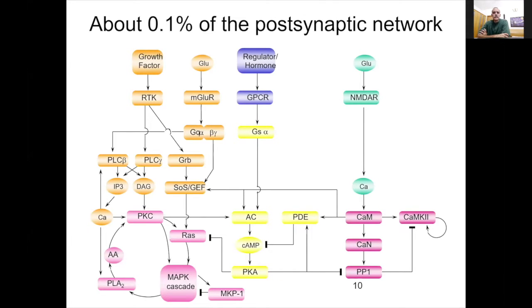Here is a network that I worked on many years ago. I estimate it's about 0.1% of what is in there. But these may be familiar pathways to many of you. On top you have various input pathways, growth factors, glutamate, hormones and regulators, feeding in through different kinds of receptors and then diving into the depths of second messengers and kinases and phosphatases and other nice things.